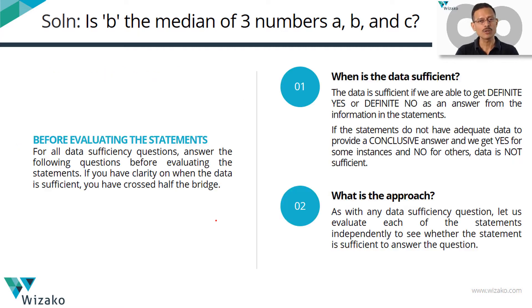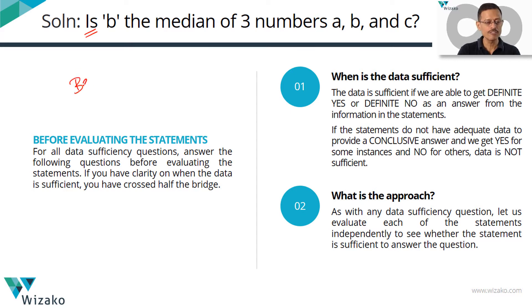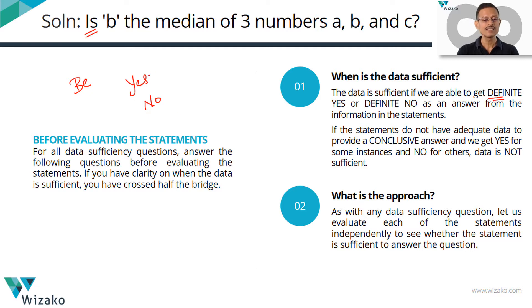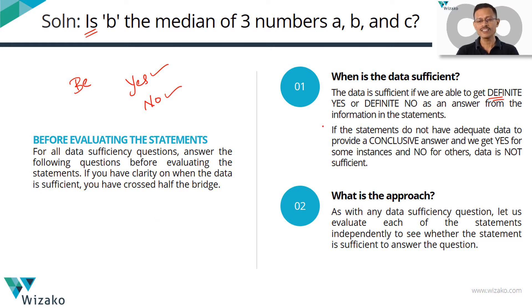Let's get into the DS component. This question is asking us to find out whether B is the median — it's an IS question, a BE-verb question. Obviously, the answer is going to be a yes or a no. If you can conclusively deduce that B is the median, the data is sufficient. Conversely, if you can say with conviction that B cannot be the median and it's either A or C, even then the data is sufficient. A definite yes or a definite no means data is sufficient. Sometimes yes, sometimes no means data is not sufficient.